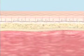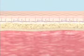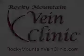Once the catheter reaches the end of the knee, it's removed, and over time the vein becomes a little fibrotic band and eventually just disappears.